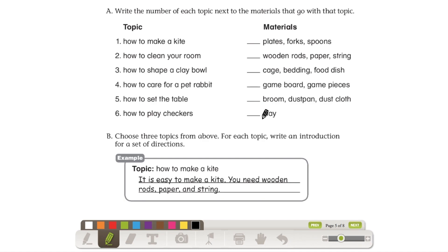Next page. So here you have to match what materials go with what project. I think you are pretty good at this, but I'll just do one for you first. And you're going to read the directions. Write the number of each topic next to the materials that go with that topic. Number one, how to make a kite. Let's see. With the kite, we will probably need wooden rods, paper, and string. So I know this one's number one.